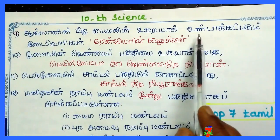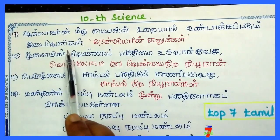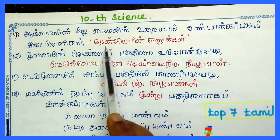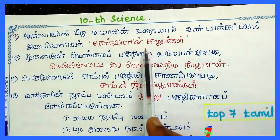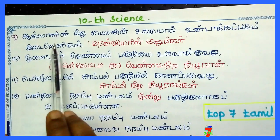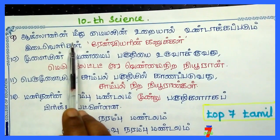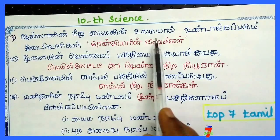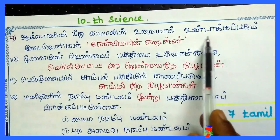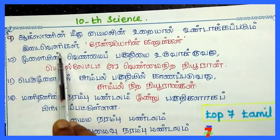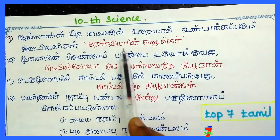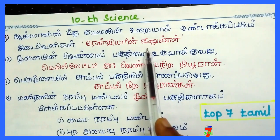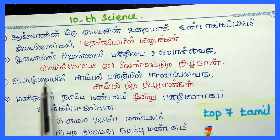Myelin sheath — the nodes along the axon covered by Myelin sheath are called Nodes of Ranvier. Along the axon, the Myelin sheath forms these structures.